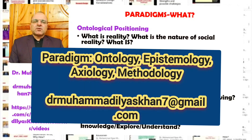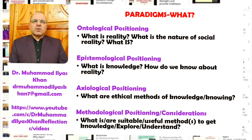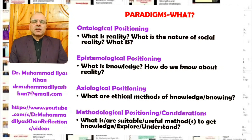The epistemological positioning addresses how we know about reality, what knowledge is, and what the ways are in which we can explore reality. It responds to questions about what are ethical methods of knowing. The methodological positioning responds to questions about what suitable or useful methods exist to get knowledge and to explore or understand natural or social phenomena.